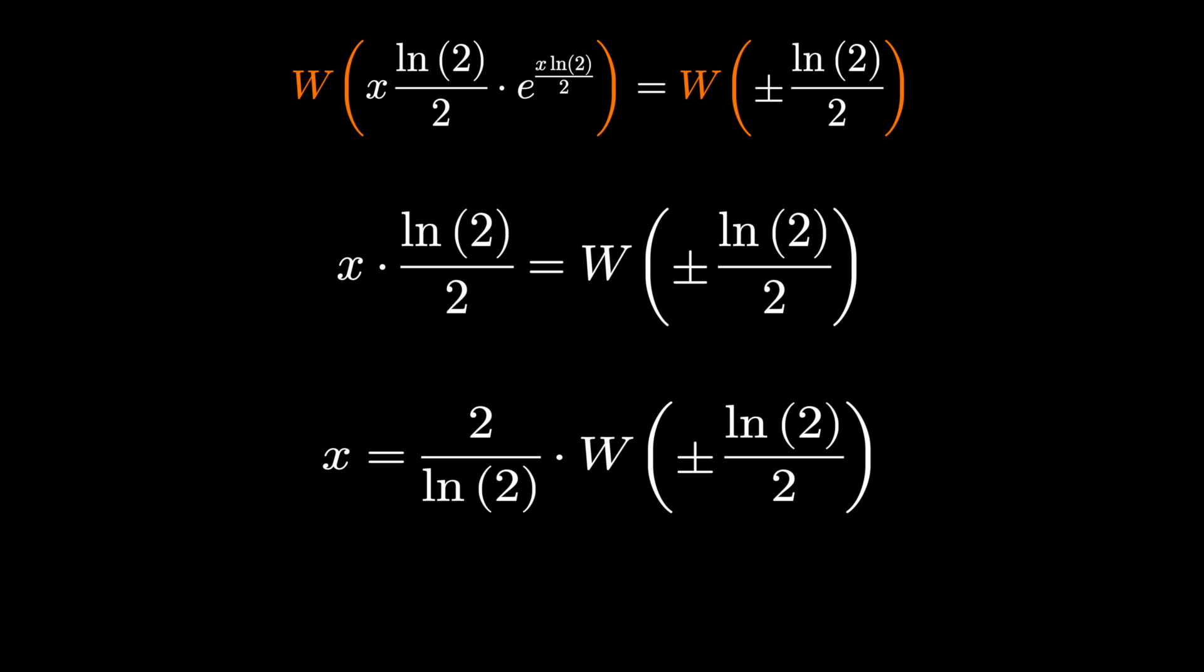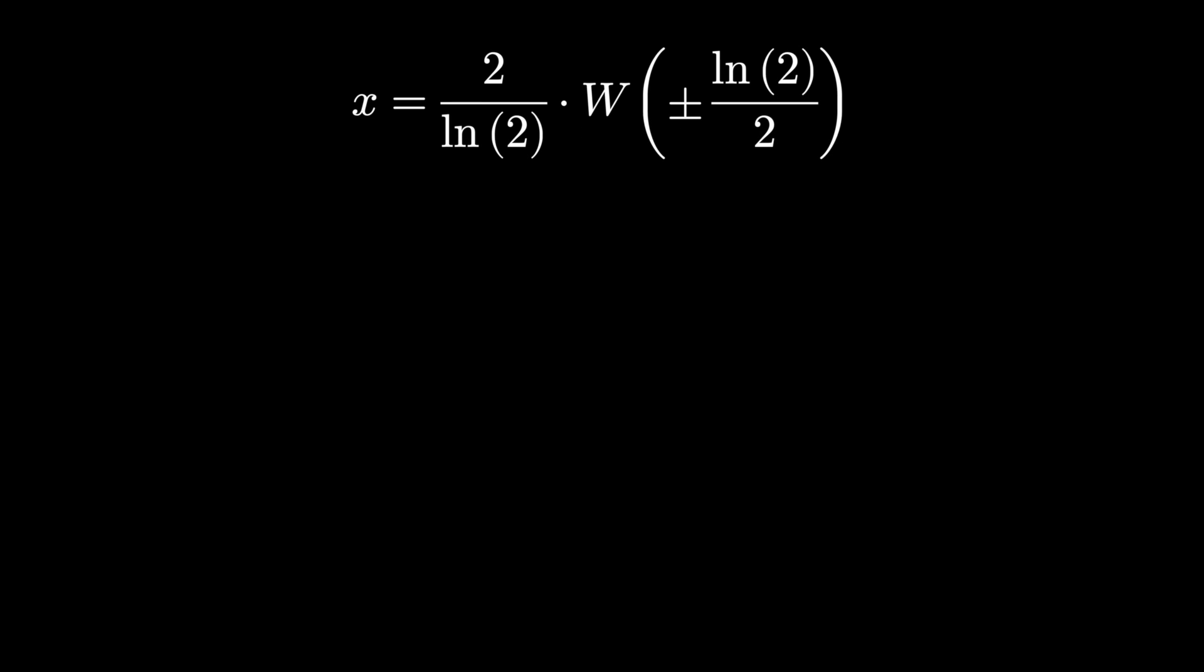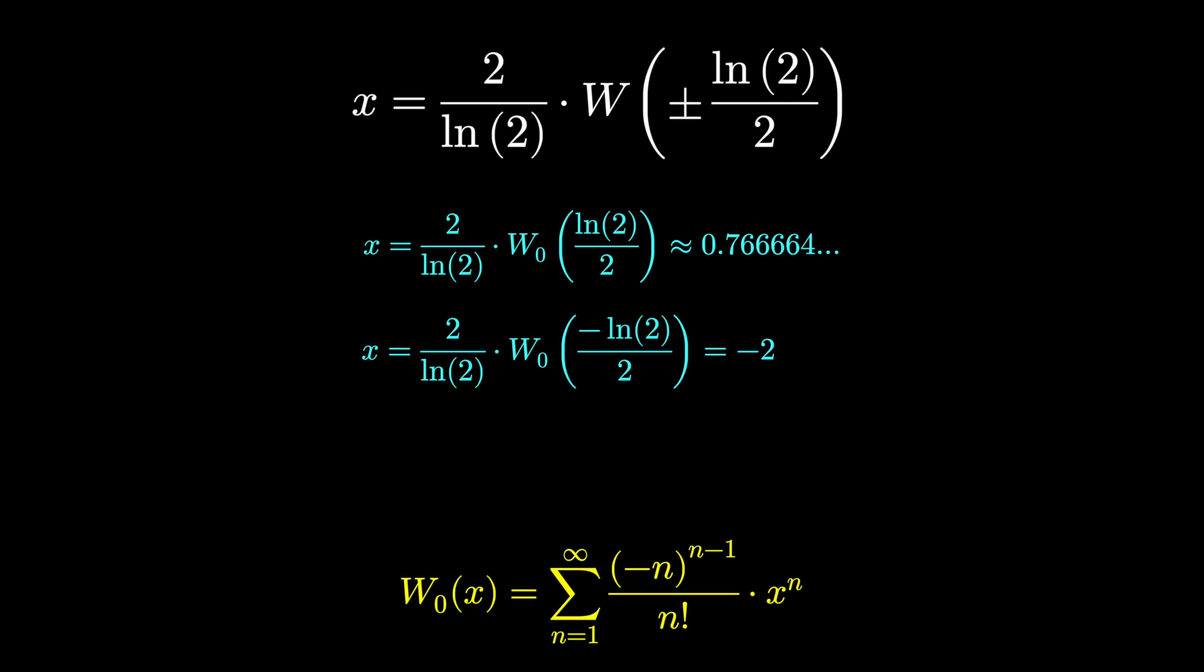This will give us our full range of answers. There's a fairly nice series representation for W. All we have to do is plug in natural log 2 over 2, also minus natural log 2 over 2, and we get these two answers.